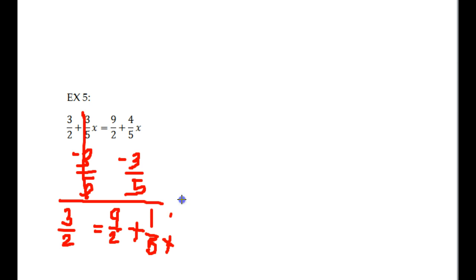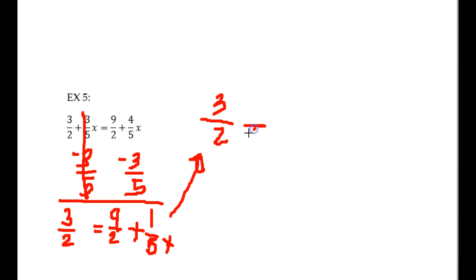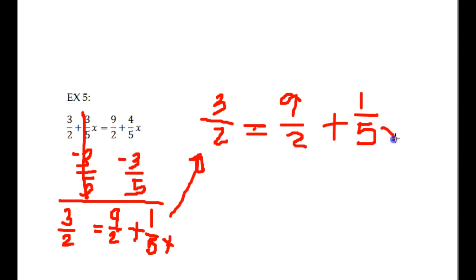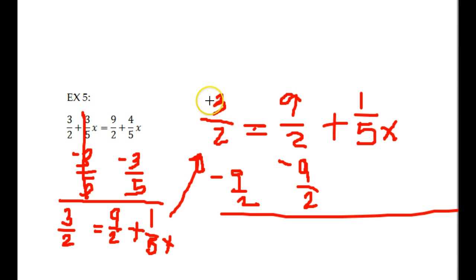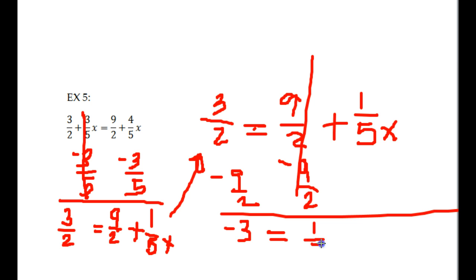So I'm going to bring it up here. I have to get rid of the 9 halves — that's the next step. Let me rewrite what we have: 3 halves equals 9 halves plus 1 fifths x. So I'm going to subtract 9 halves on both sides. 3 halves minus 9 halves — what's 3 minus 9? Negative 6 halves. Negative 6 halves reduces to negative 3. Equals 1 fifths x.